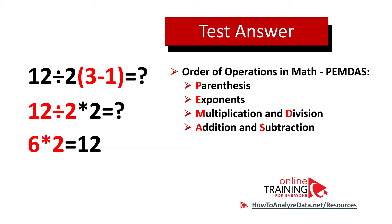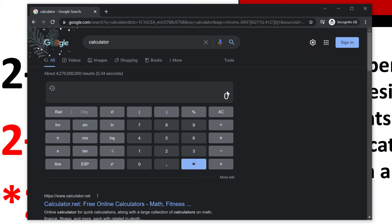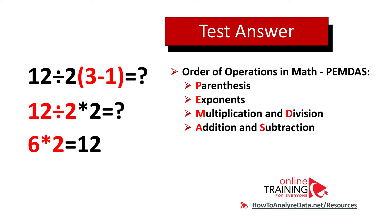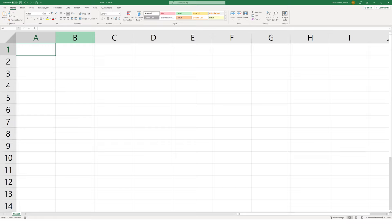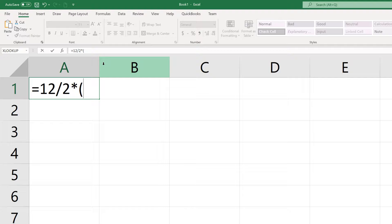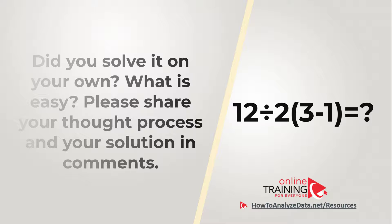Let me give you a quick hint: even if you don't know the answer, you can use a calculator. Most modern calculators support expressions. For example, if you type 'calculator' in Google, it shows a calculator you can use. You can also use Microsoft Excel, available on almost any Windows machine — just enter the expression in any cell and it will calculate the answer, which is 12. Please share your thought process in the comments.